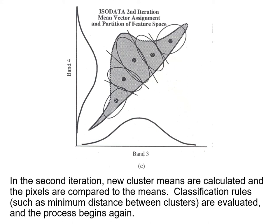Once we've calculated new cluster means, we do the same process again: look at all the pixels and ask which cluster each pixel now belongs to. The cluster mean may have moved, so now another cluster mean might be closer. The process begins again — reassigning pixels, recalculating cluster means, then checking what percentage of pixels have changed class. We keep doing this until we've met the criteria for the fraction of pixels not changing, or we run out of specified iterations.